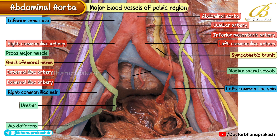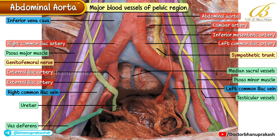The vas deferens crosses the external iliac vessels in the lower part of the image. Finally, the testicular vessels are seen on the left side of the psoas minor muscle and its tendon.